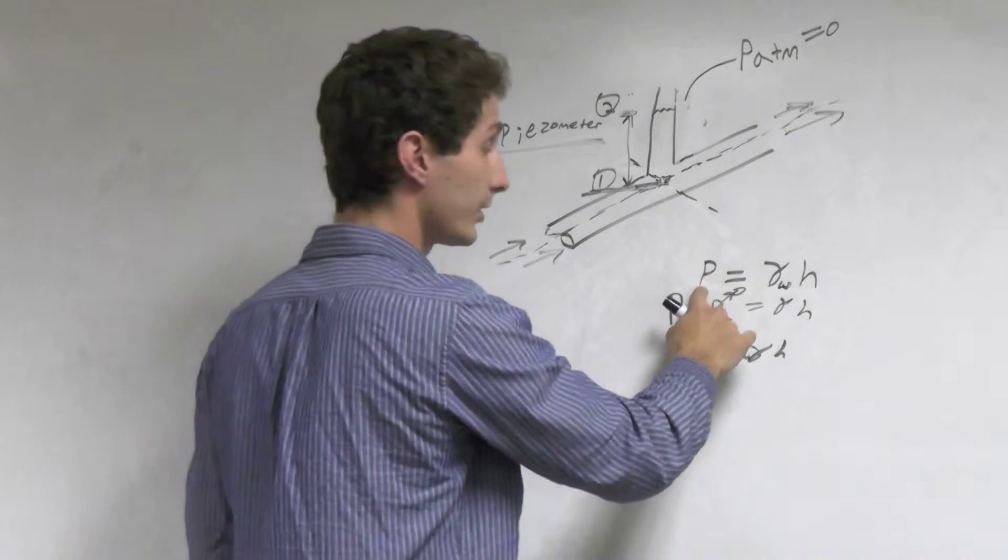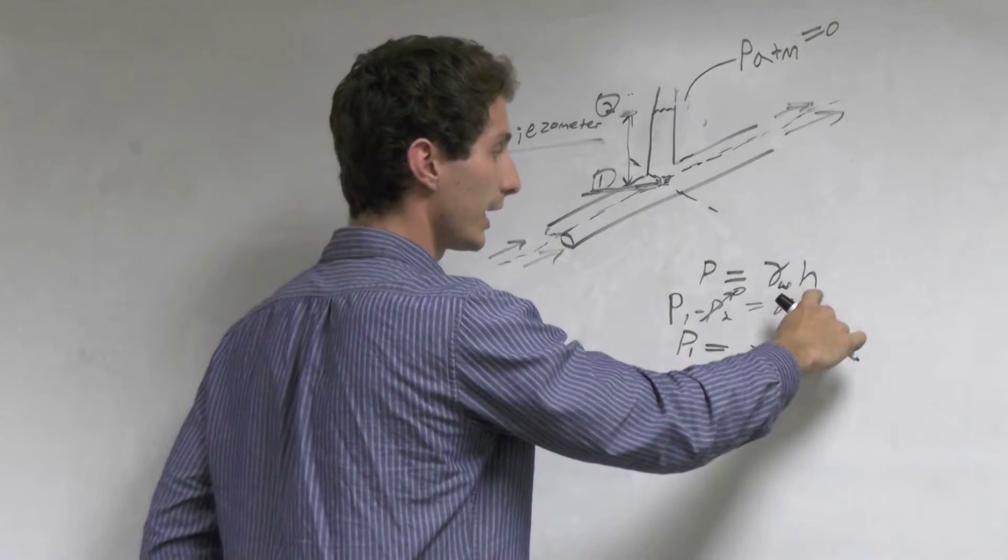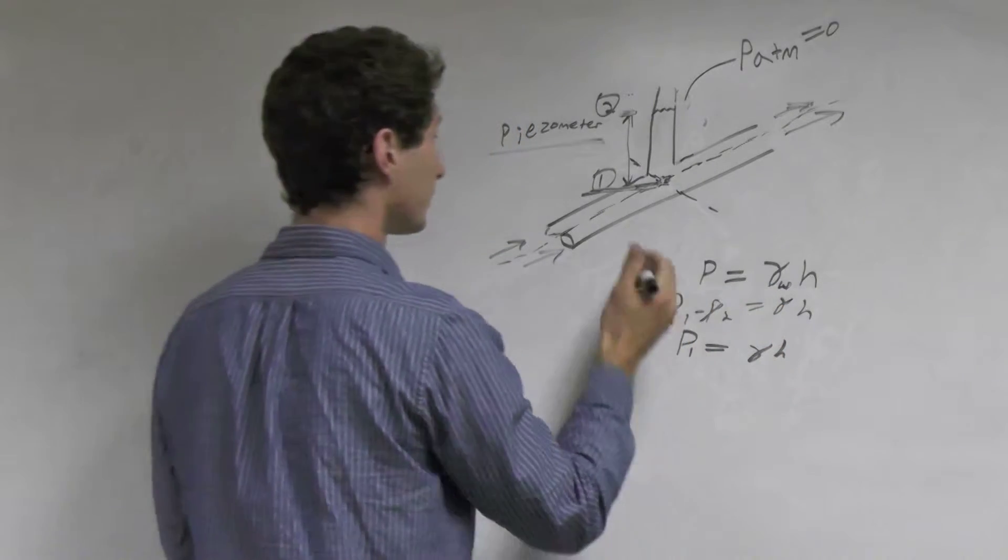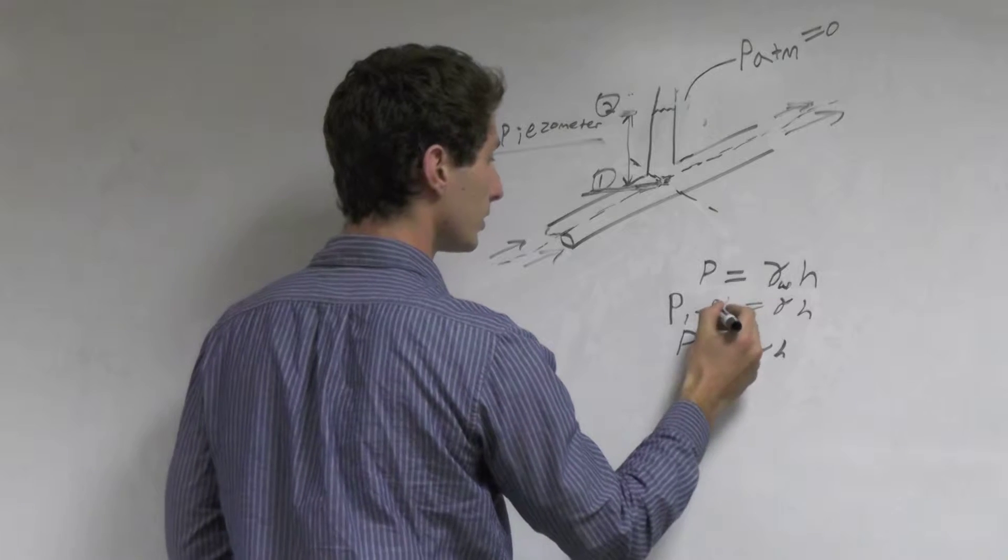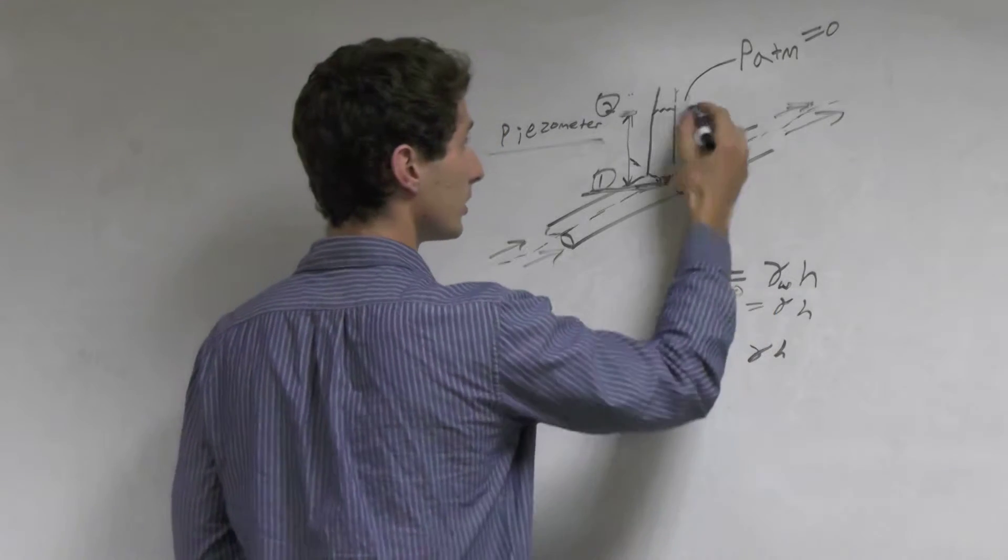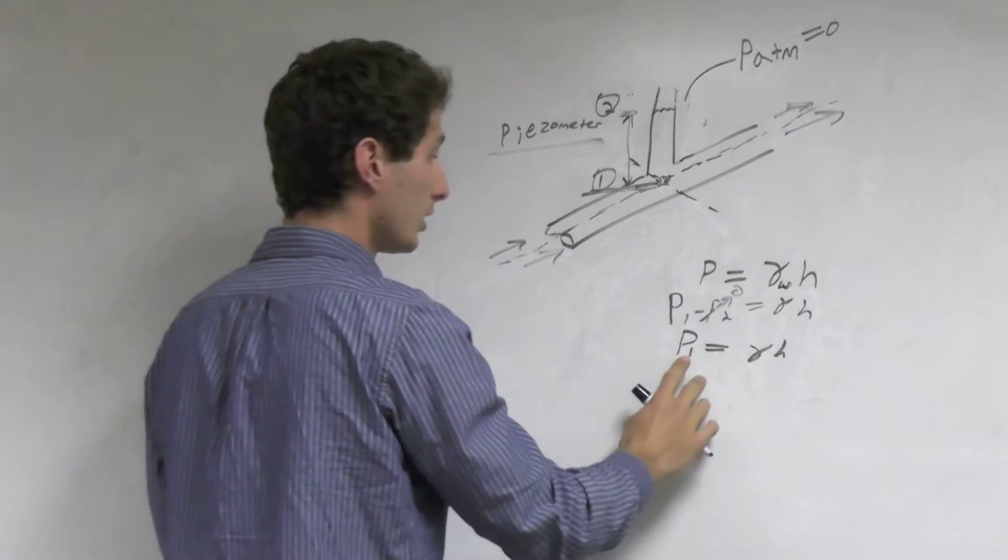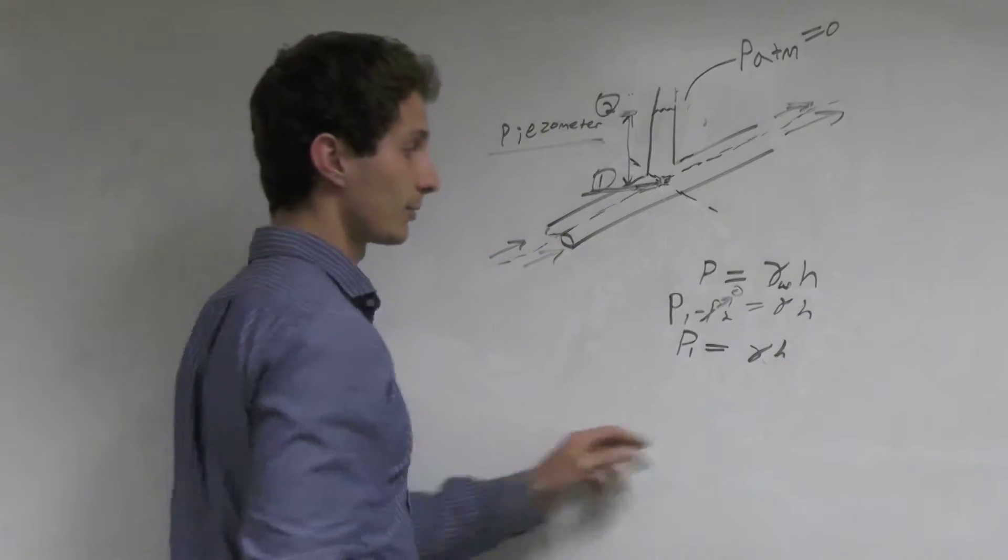The hydrostatic equation is change in pressure equals gamma times change in height. That's gamma water, from pressure one to pressure two. Pressure two equals zero because it's open to the air—that's atmospheric pressure. So pressure equals gamma water times height.